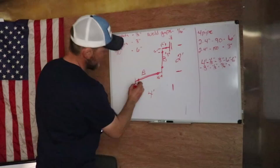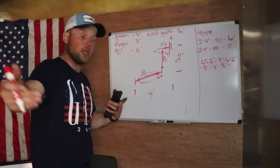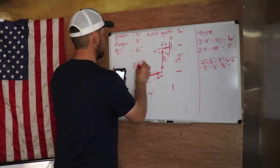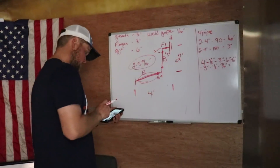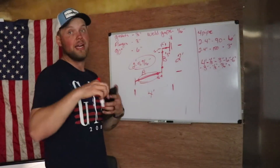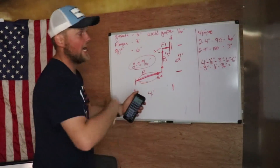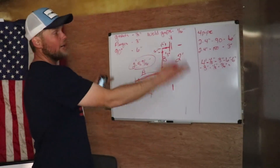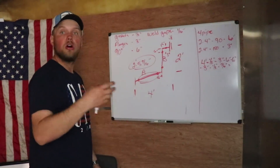So pup A — this piece right here, the pup we gotta cut in order to make the distance work — is going to be two foot five and nine sixteenths of an inch. That is pup A. Now the other way you guys can check and make sure you're right — kind of double and triple check yourself — just start adding all that back in. You've got two foot five and nine sixteenths, add your weld gaps, add your gaskets, add your 90s, add your flanges, and you should come back out to four foot overall length. If you don't, something is wrong and you need to go back through and check it again.